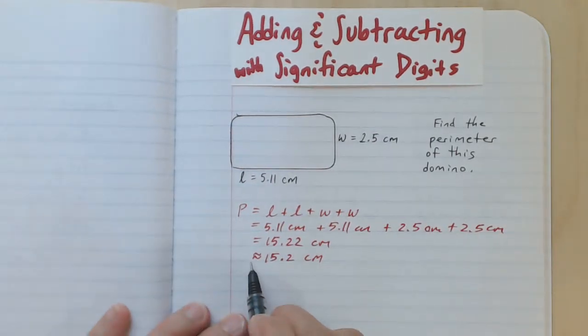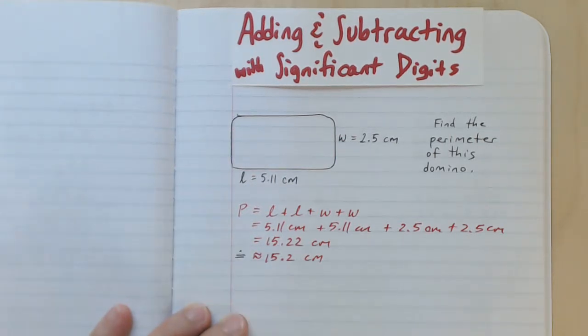So we've written approximately equal to, we've used this symbol. We could also use the equal sign with a dot over it. That means the same thing, it's been rounded, 15.2 centimeters.